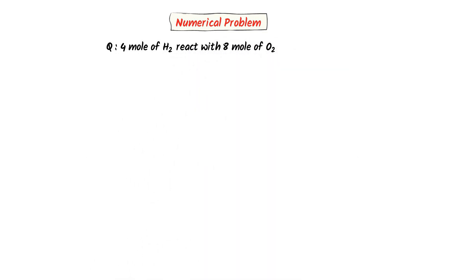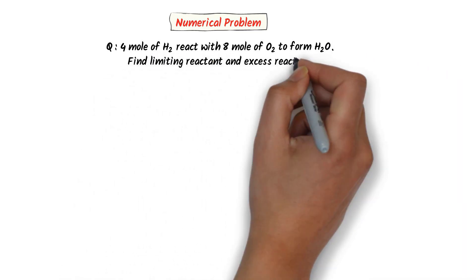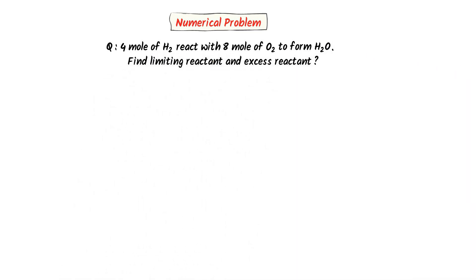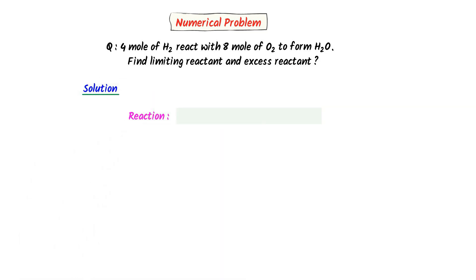For example, consider this numerical problem: 4 moles of hydrogen gas react with 8 moles of oxygen gas to form H₂O. Find the limiting reactant and excess reactant. I write the reaction: hydrogen gas reacts with oxygen gas to form H₂O. Secondly, I balance the reaction. I write 2 here and 2 here — it is now a balanced chemical reaction.